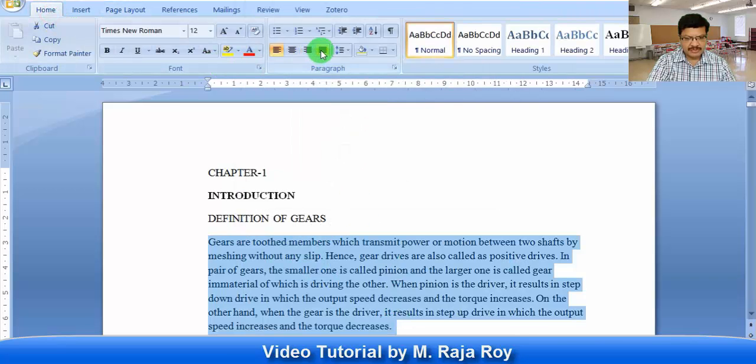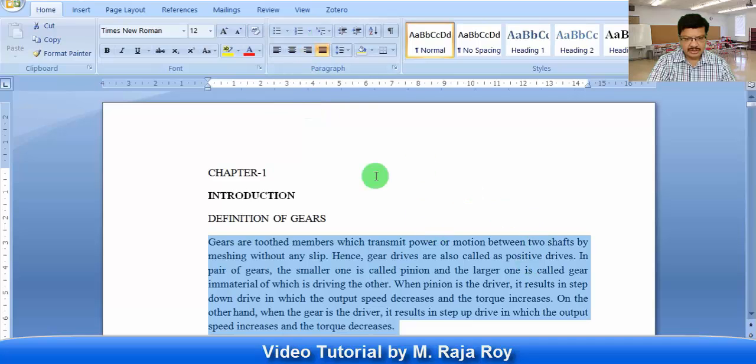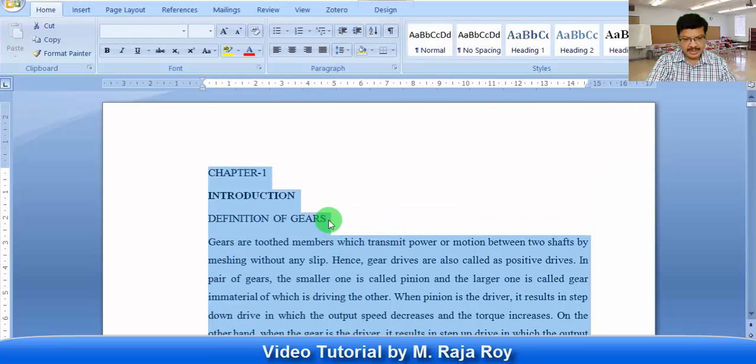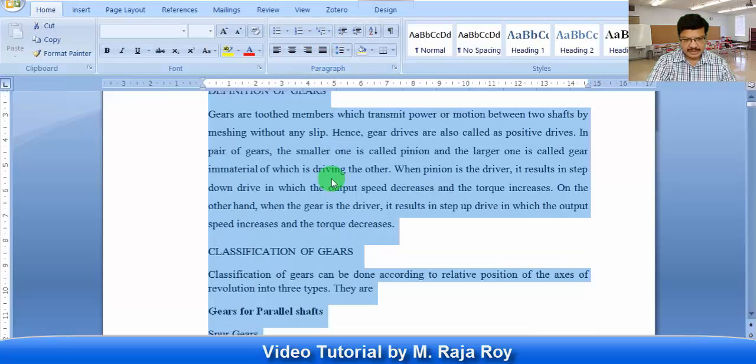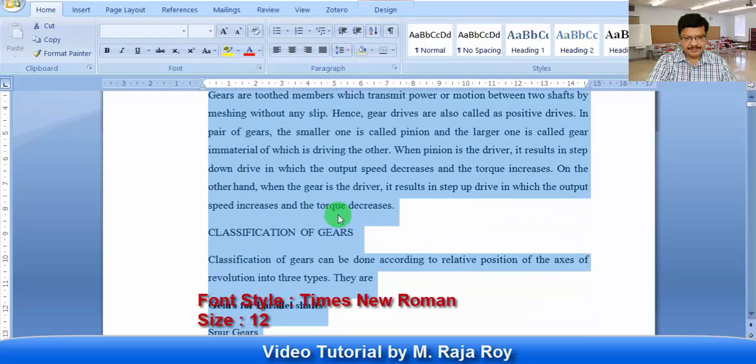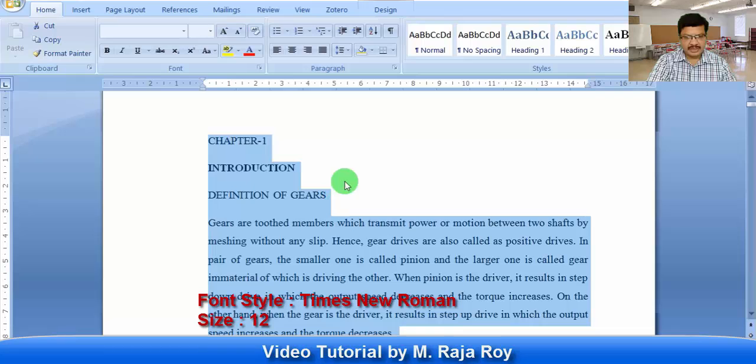Here you have to completely justify this text like this, and line spacing is 1.5 line spacing you have to consider. So first you take Control A, go to justification like this for the total project work. Then select 1.5 spacing. So this is the standard line spacing.